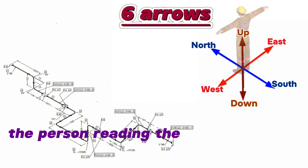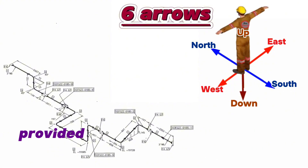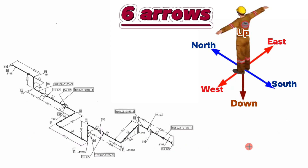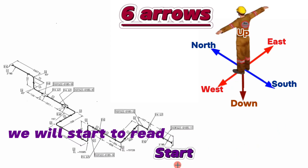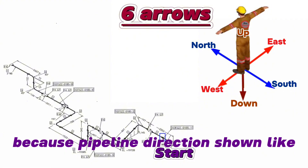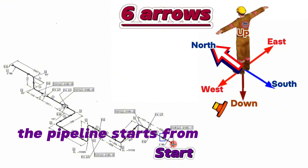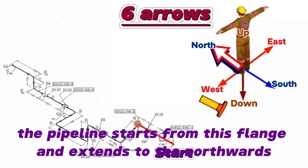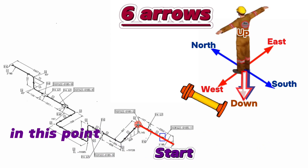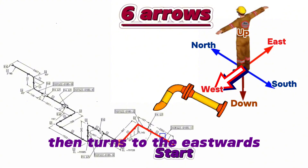The person reading the drawing should imagine himself facing north, positioned at the center of these directions. We will start reading this pipe drawing from the starting point based on the pipeline direction shown. The pipeline starts from this flange and extends northwards.